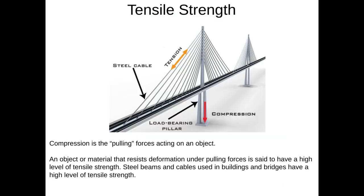The opposite of compressive strength is tensile strength. Tension is the pulling forces that act on an object. The steel cables on a suspension bridge are forever under tension, as the deck and the load from the cars are trying to pull them downwards. If those cables had poor tensile strength, they would stretch and the bridge would collapse.